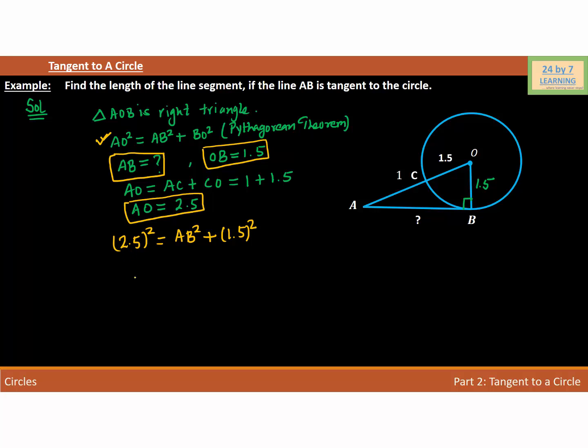Let's simplify further. The square of 2.5 is 6.25 = AB² + the square of 1.5 is 2.25.